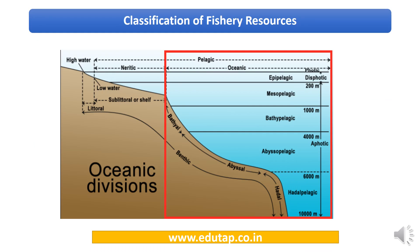Before proceeding, we need a quick revision of ocean zone classification from a previous lecture. This is important because the upcoming sections use these zone terms extensively. On the broadest level, the ocean is divided into the pelagic zone (the water column) and the benthic zone (the ocean floor).